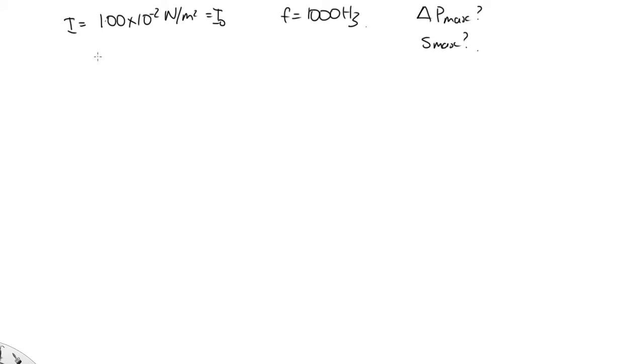So we can use the equation I is equal to delta P max squared over 2 rho V. We just need to substitute into this equation. So we've got delta P max squared is equal to 2 rho V I, which is equal to 2.